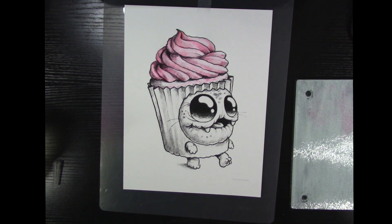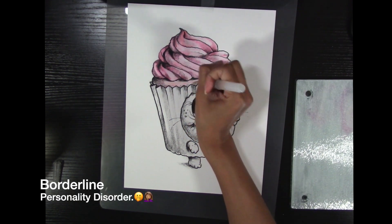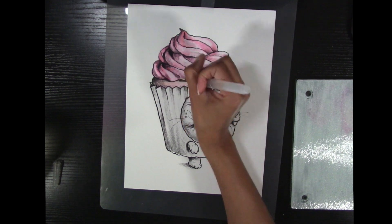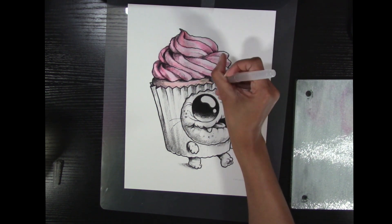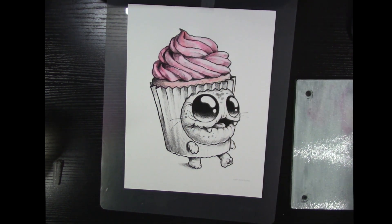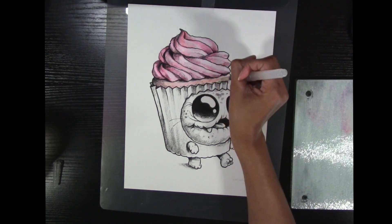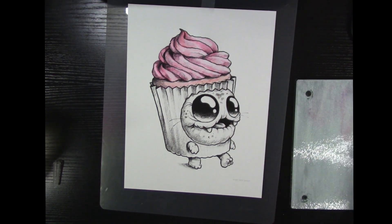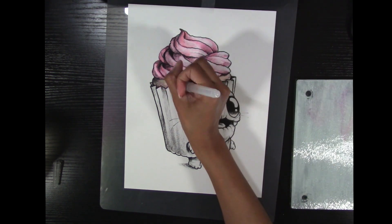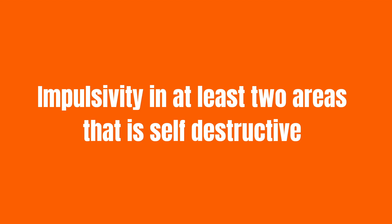Number three is identity disturbance with markedly or persistently unstable self-image or sense of self. They may change their style, way of being, hairstyle, hair color, ideas, or beliefs because they lack a true sense of self.